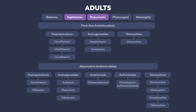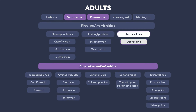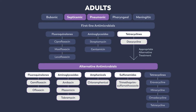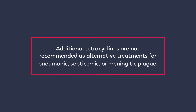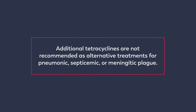For pneumonic and septicemic plague, doxycycline is not first-line but is an appropriate alternative treatment if first-line antimicrobials are not available. Additional tetracyclines are not recommended as alternative treatments for pneumonic, septicemic, or meningitic plague.